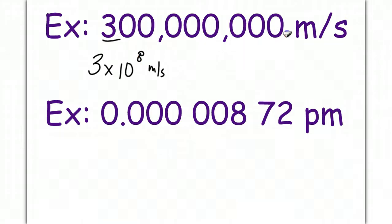Remember, your decimal is understood to be here, even though it's not written there. The sig figs in the second example are 8, 7, and 2, and so we're going to write 8.72 times 10, and then because this is a number smaller than one, we're going to have a negative exponent, and then we count, move the decimal to the 8, so we go 1, 2, 3, 4, 5, 6. So this is 8.72 times 10 to the negative 6 picometers.